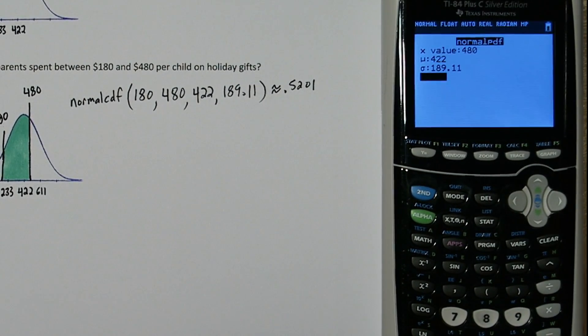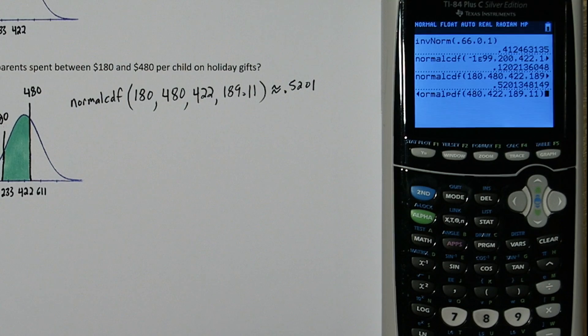Now, many students think that what this will tell you is what the probability of a parent spending exactly 480 is. That's not what this tells you. I'm going to press enter.